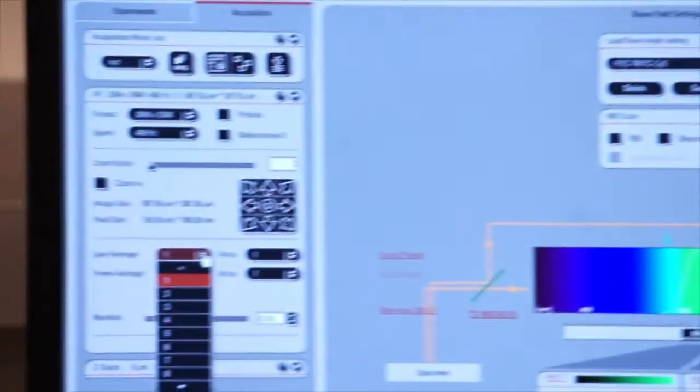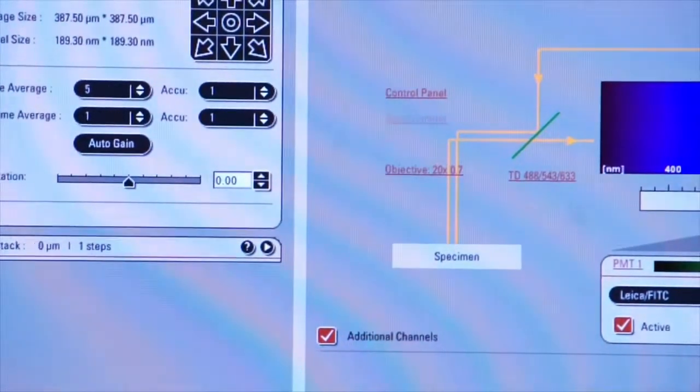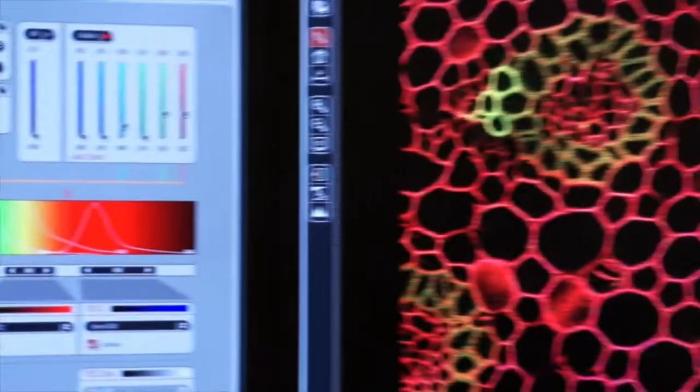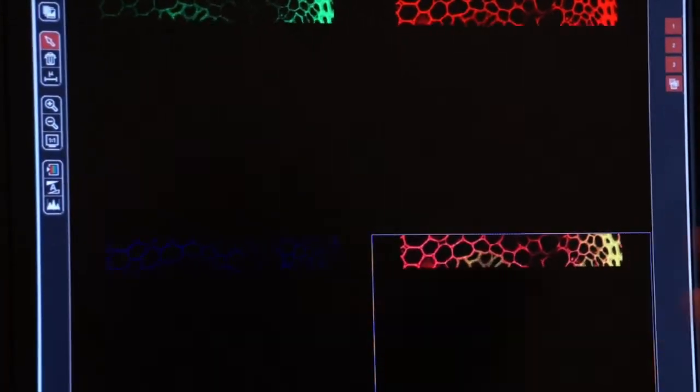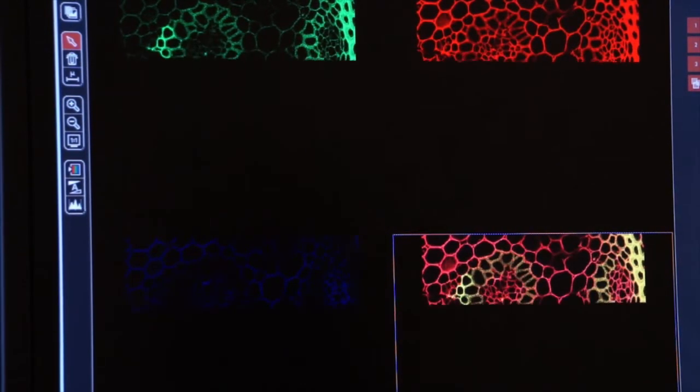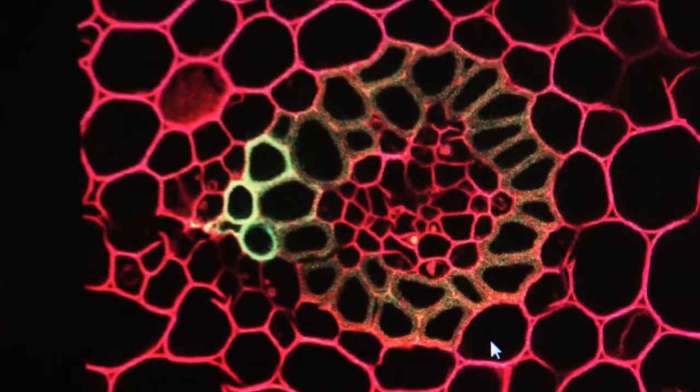So let's go back and engage line averaging. Let's select five scans per line. We'll click on capture image again. Watch the right screen and you'll see our new image come up. Again it's slower. Why? We're scanning each line five times. But when you look at the result in image you'll see that a lot of the noise has gone away and a lot of the pixelation has gone away.